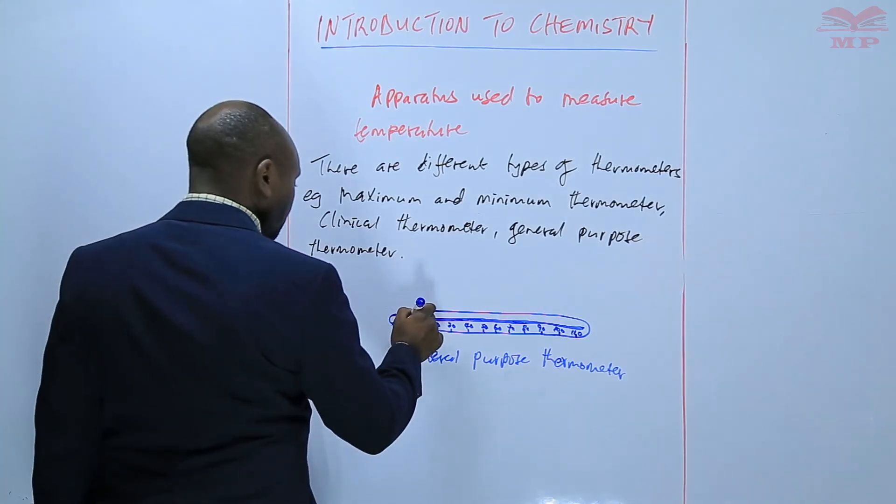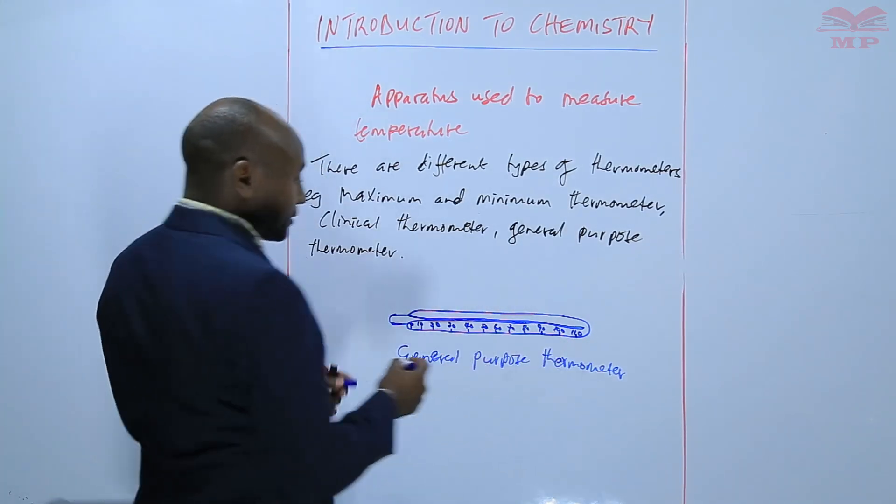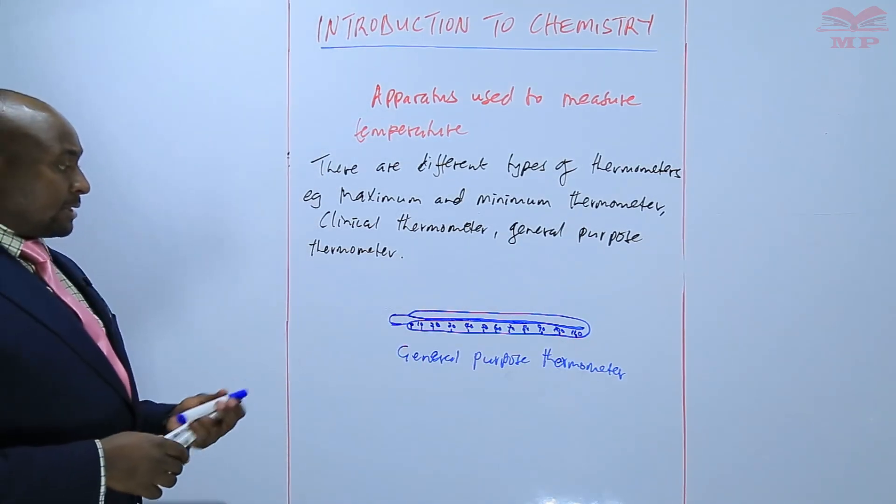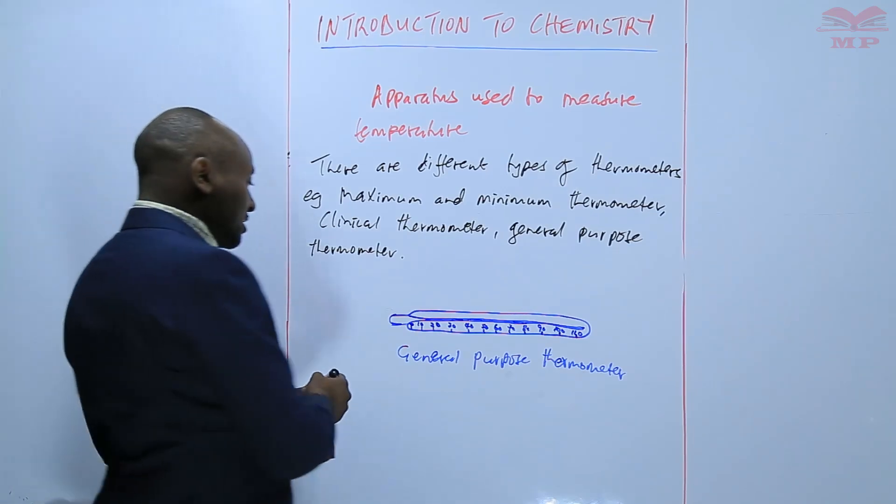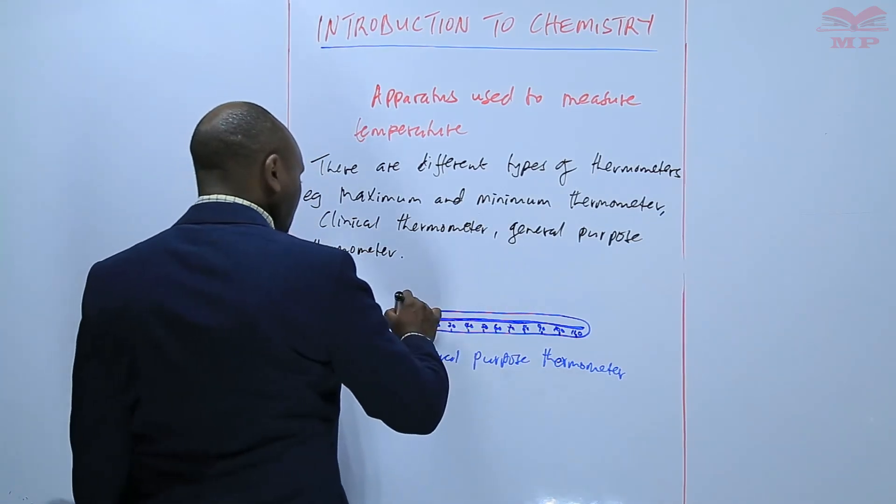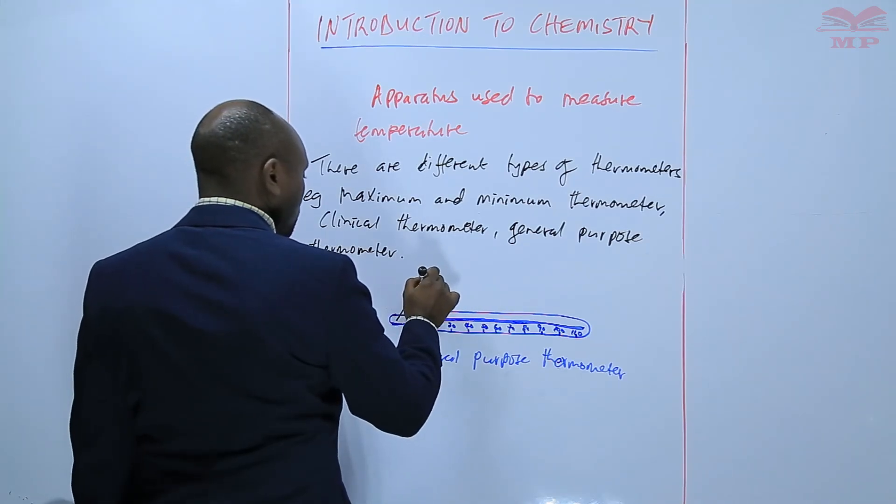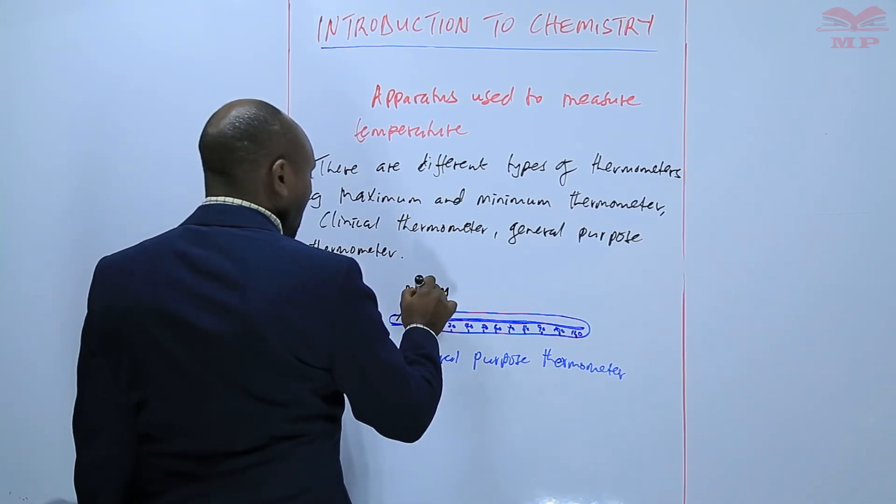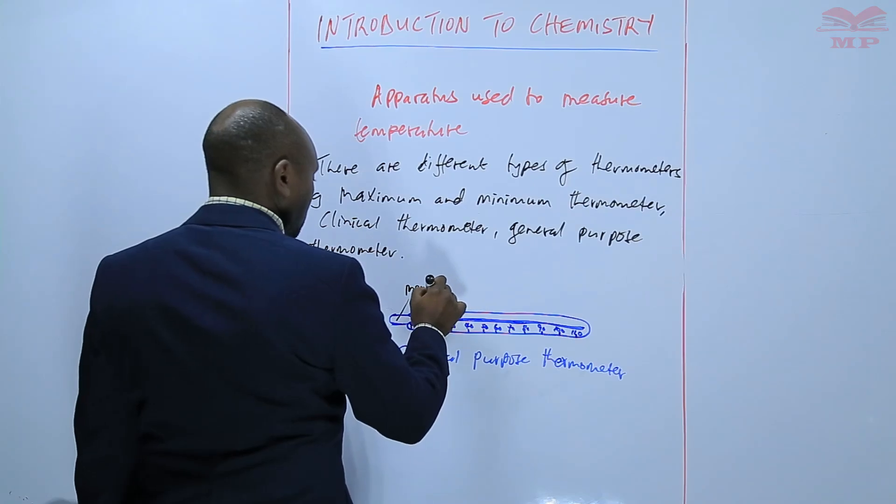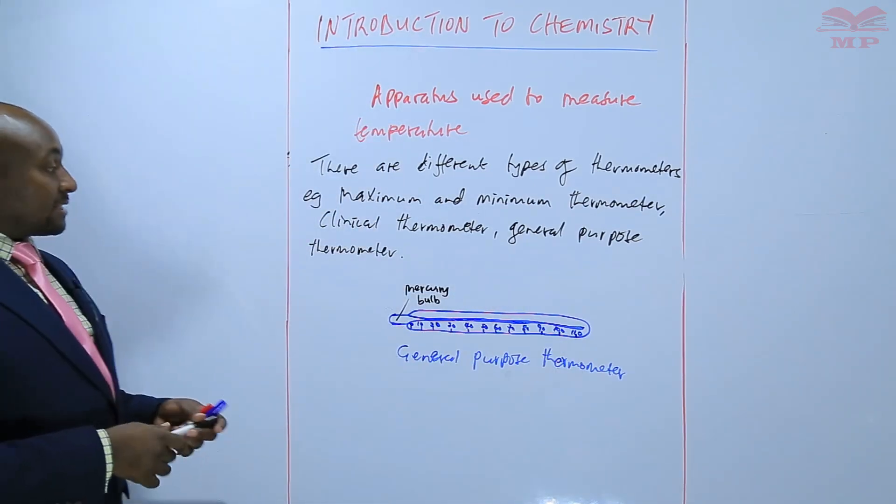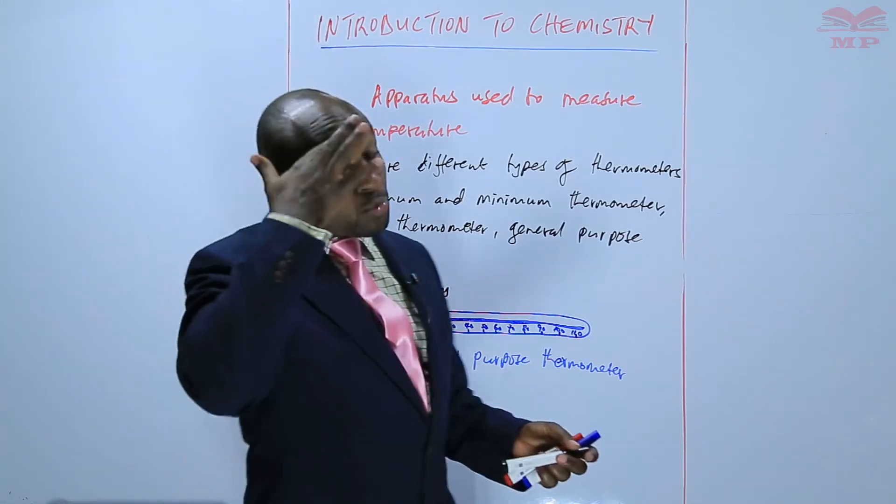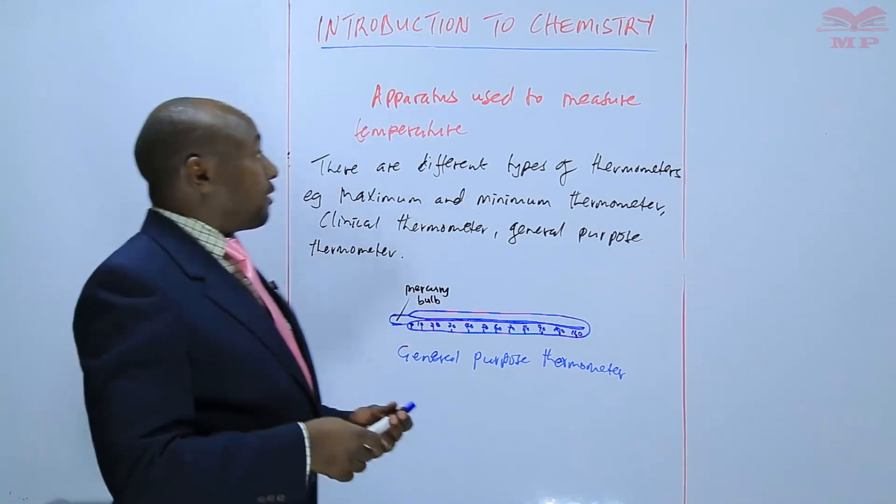So in case this one is a mercury thermometer, we refer to that as the mercury bulb. But basically, we are saying that it can either be made of mercury or it can be made of alcohol.